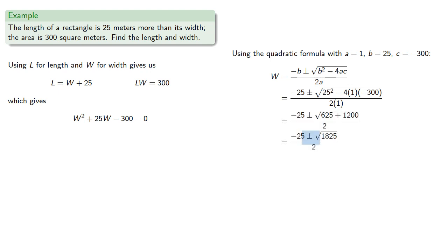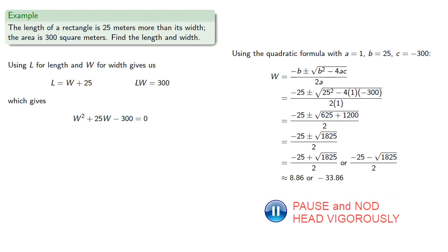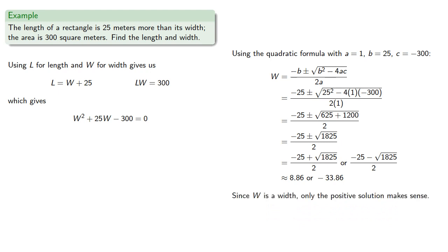And remember, this plus or minus really means that we have two solutions. So let's split this and write them as two solutions and evaluate. And since W is a width, only the positive solution makes sense. So let's go ahead and write that down.